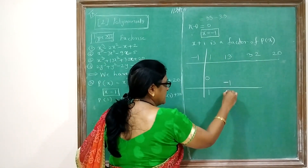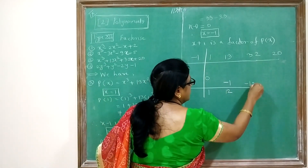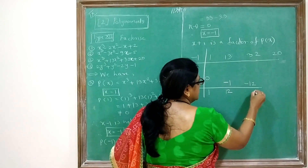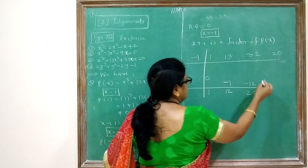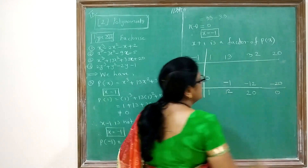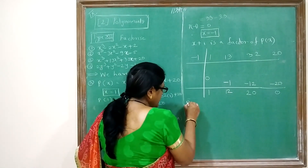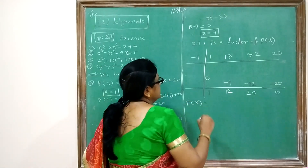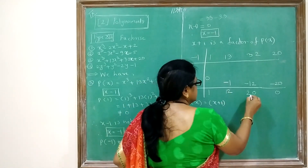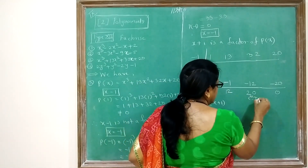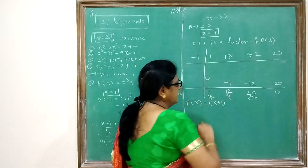1 × (−1) = −1. Then 13 − 1 = 12. 12 × (−1) = −12. Then 32 − 12 = 20. 20 × (−1) = −20. Then 20 − 20 = 0. The last value is the constant term, then the x term, then the x² term.